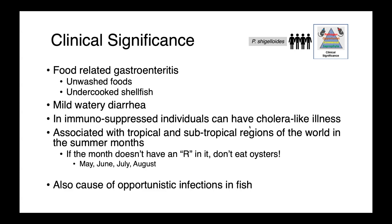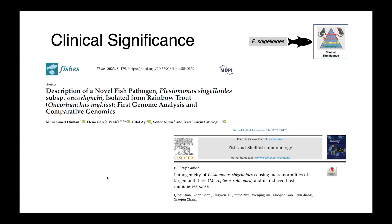Plesiomonas shigelloides causes a food-related gastroenteritis in people. We see it with unwashed foods or undercooked shellfish, and it often presents as just a mild watery diarrhea. But in immunosuppressed individuals it can be a very severe cholera-like illness. We associate it primarily with tropical and subtropical regions in the summer months — this is where the saying about not eating oysters during months without an R comes from; so in the northern hemisphere, avoid raw oysters in May, June, July, and August. This organism also causes opportunistic infections in fish, including rainbow trout and largemouth bass, and may be an emerging pathogen to be aware of.